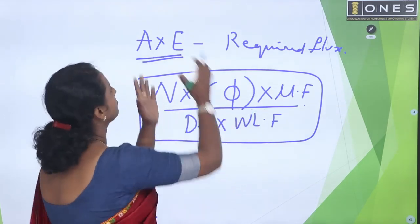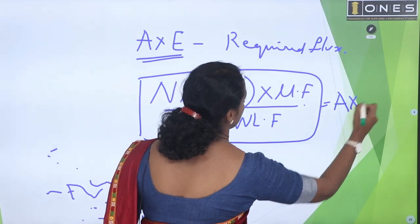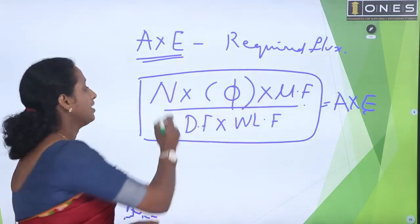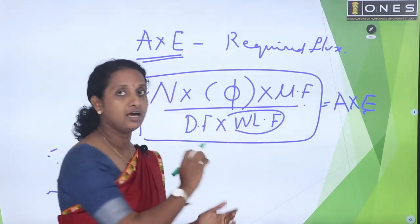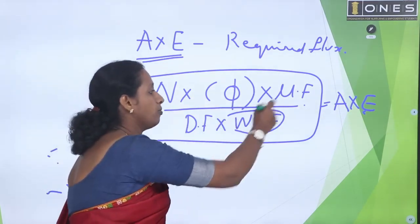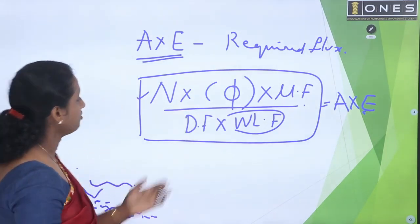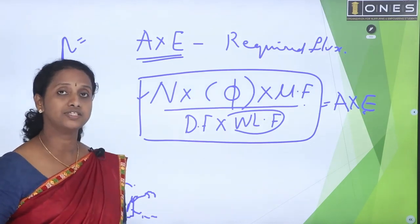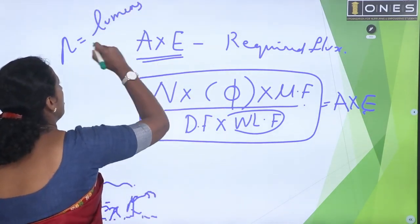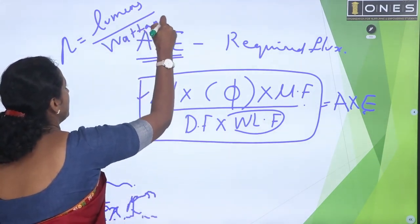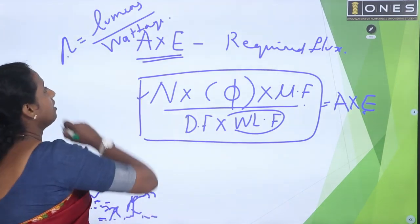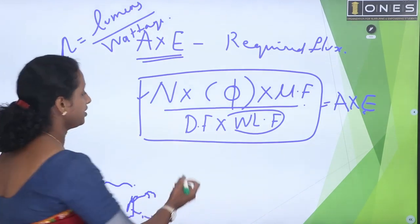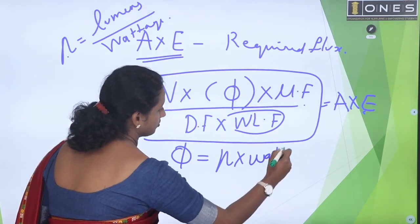If we equate the required flux to A into E, and also consider that luminous efficiency equals lumens divided by wattage — one lamp into wattage — then efficiency into wattage equals lumens, φ. So φ is equal to efficiency into wattage. That is the final equation we use to find the number of lights for a room.